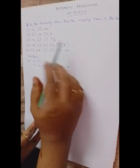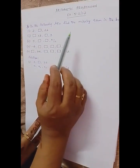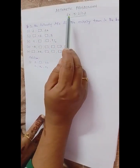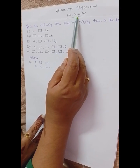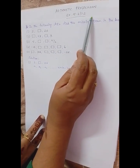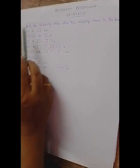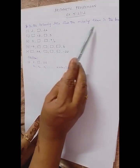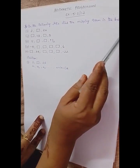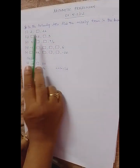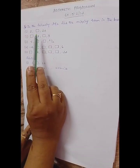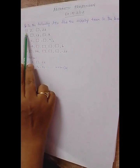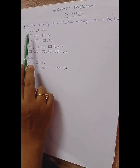Hello everyone, welcome back to my channel. Today we will be learning arithmetic progression, exercise 5.2 (or exercise 1.2 in state syllabus). This is the third main: 'In the following AP, find the missing term in the boxes.' We have done the previous two mains in my previous videos, you can watch those.